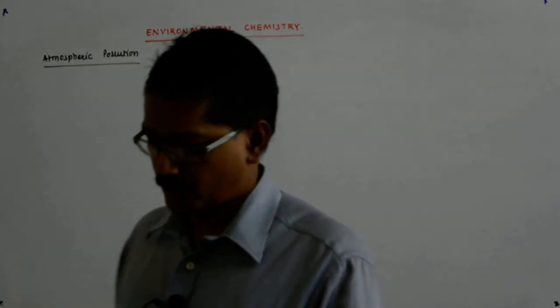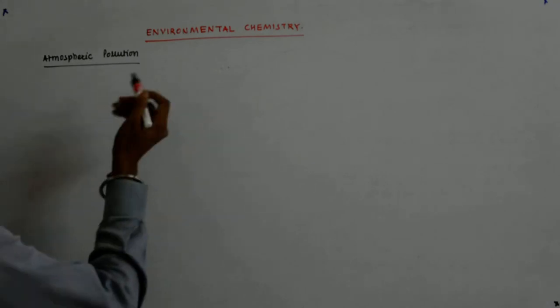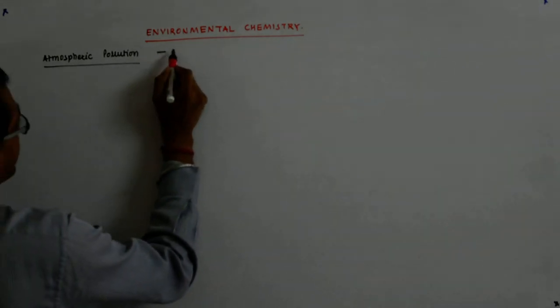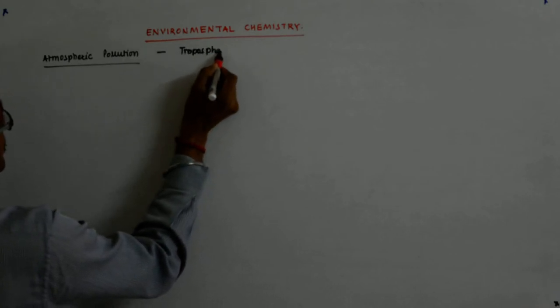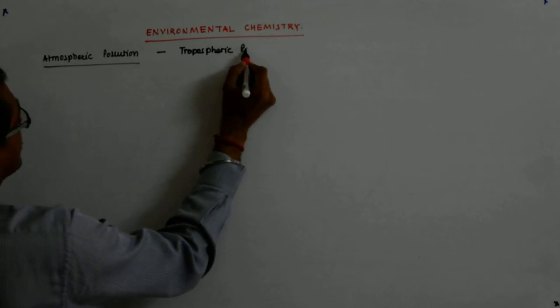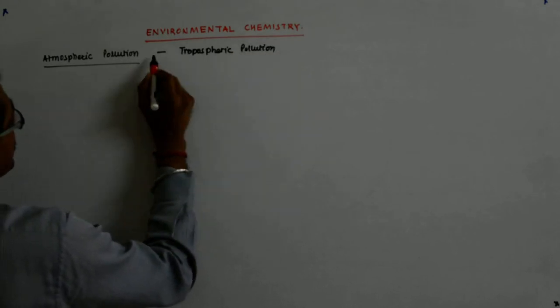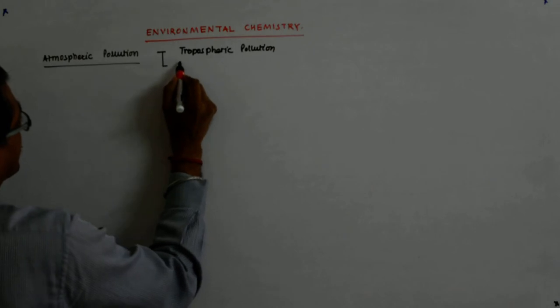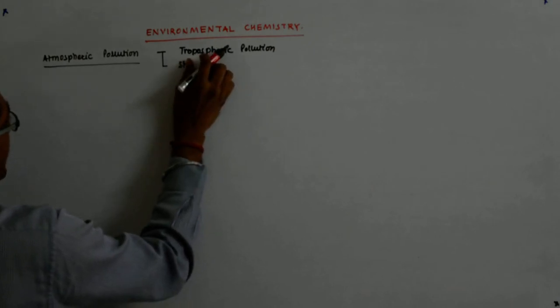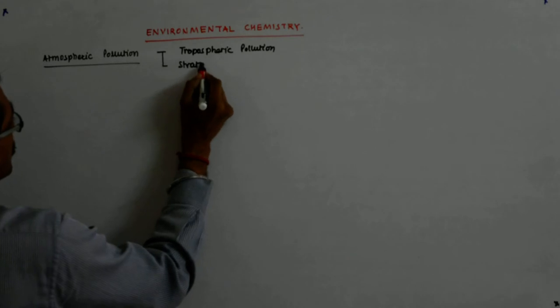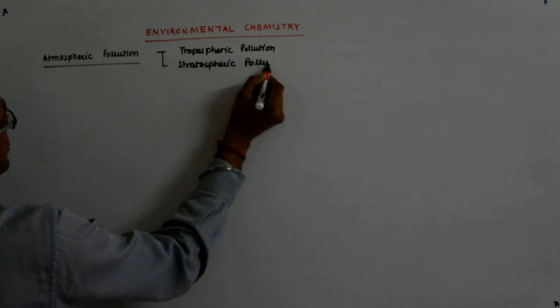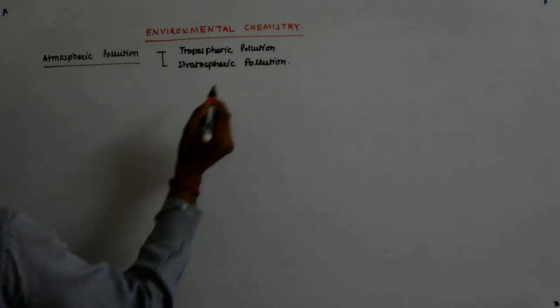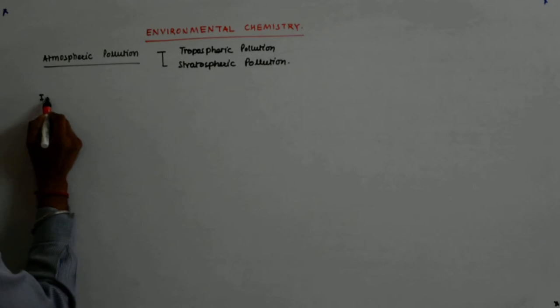We saw that atmospheric pollution has two types in the sense that they are concentrated in two different regions. One of them is tropospheric pollution and the other is stratospheric pollution.